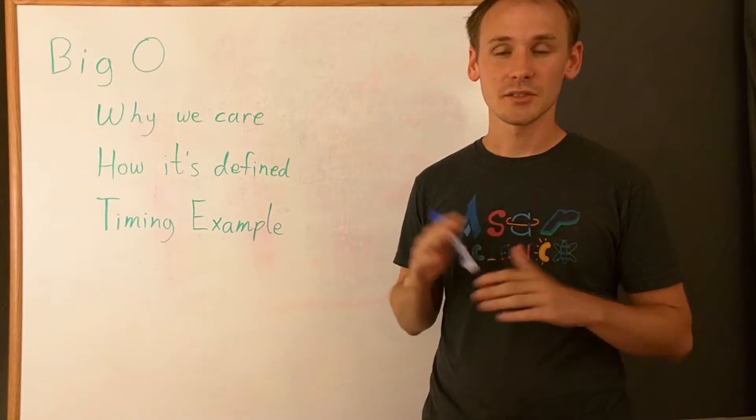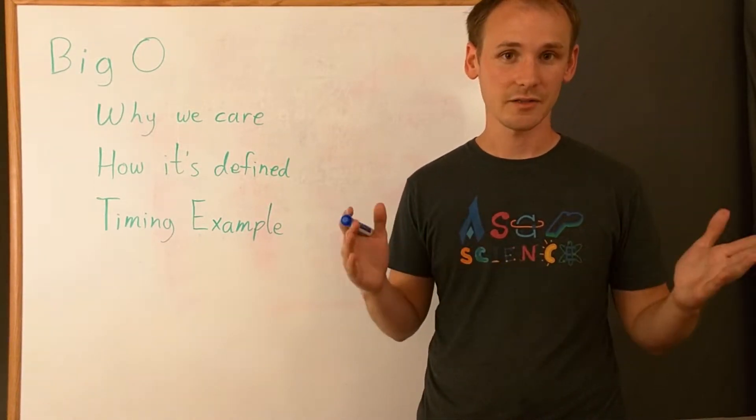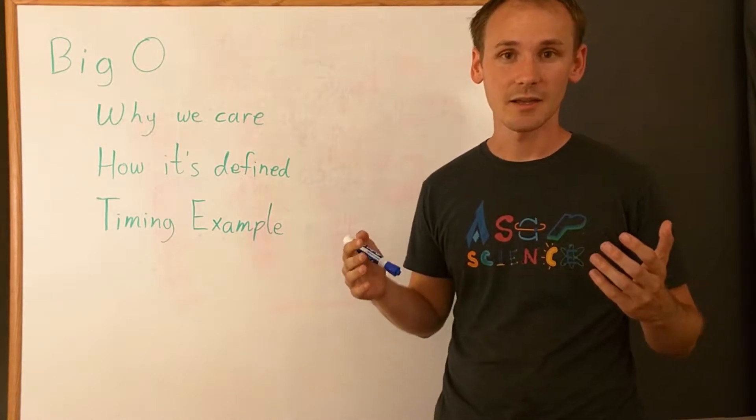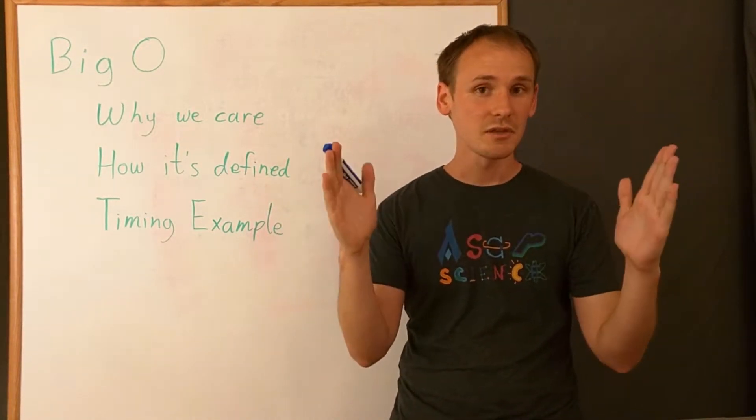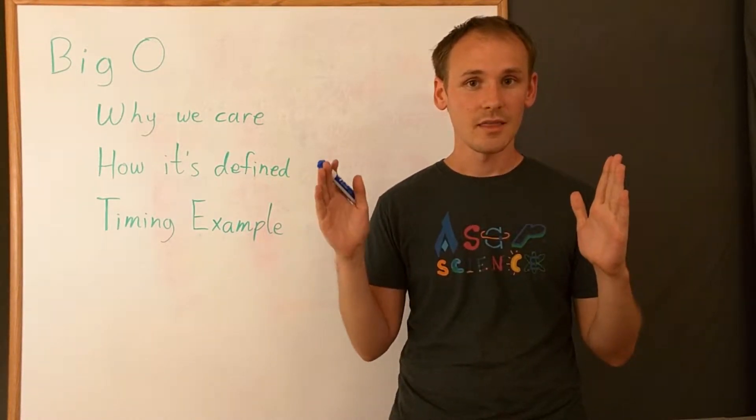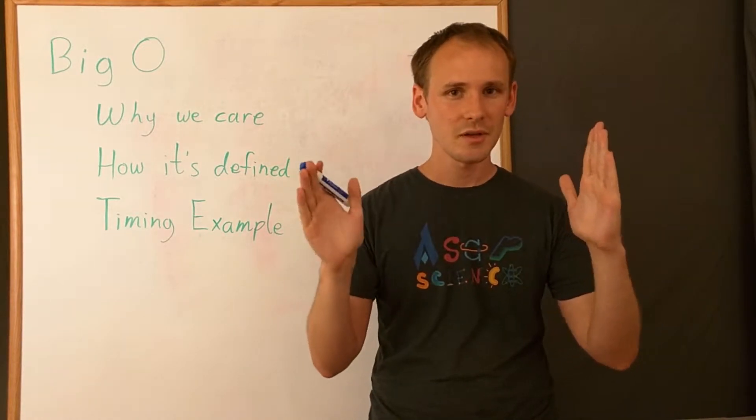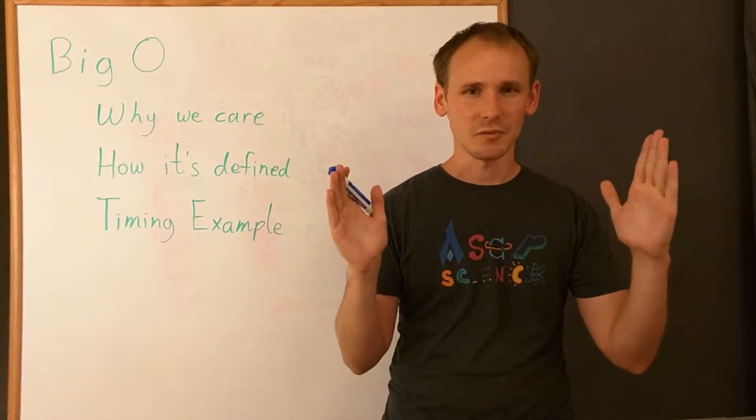One thing we can do is sort the words ahead of time. And if we do that, then we can take advantage of binary search. The basic idea behind binary search is if I have, say, a million words and I know that they're sorted, then I know that it's somewhere between word zero and word a million minus one.